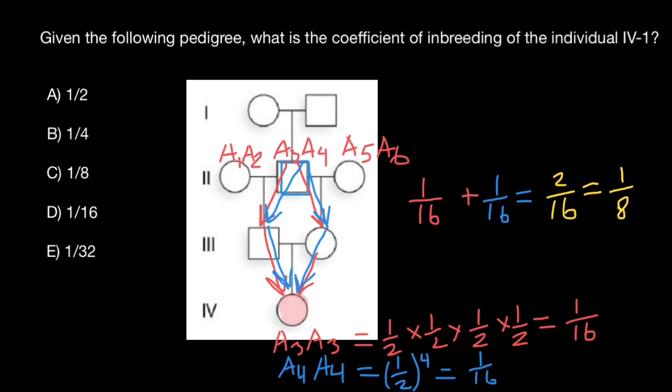So as you see, the correct answer is answer C. Inbreeding coefficient of this person would be one-eighth. That means that one-eighth of all his genes or loci would have two identical alleles which are going to be identical by descent.